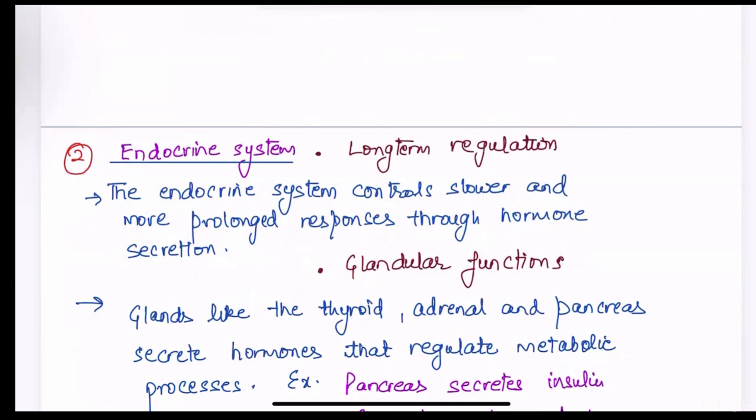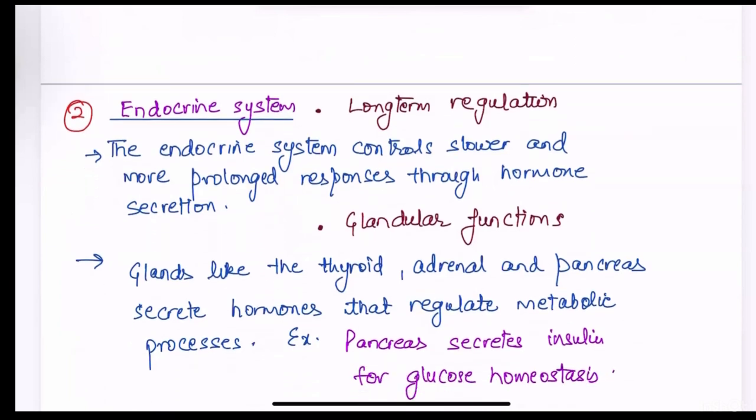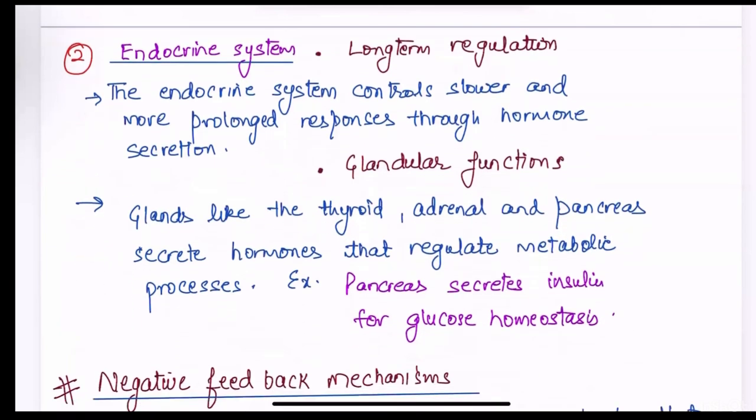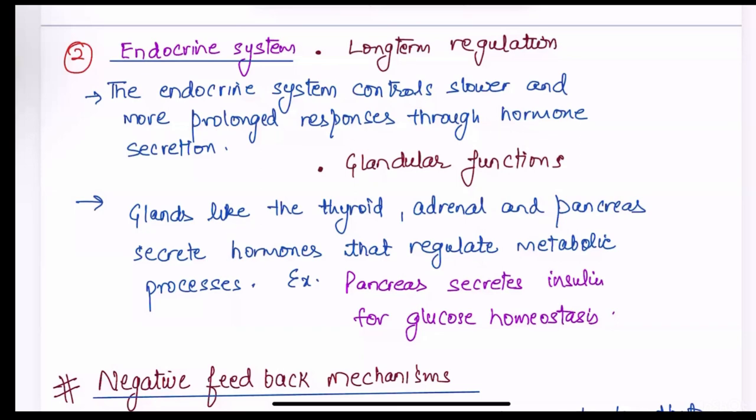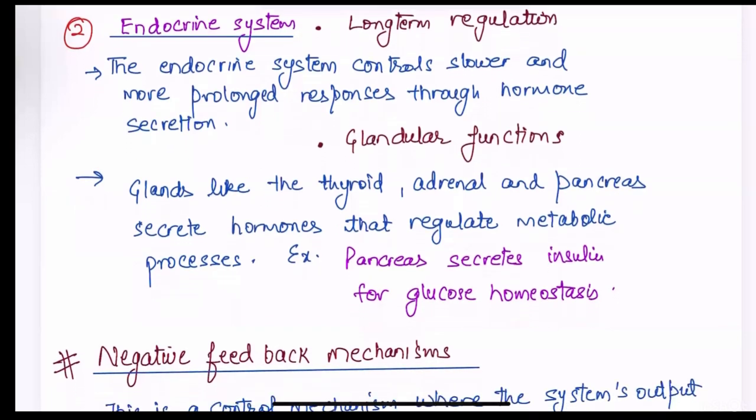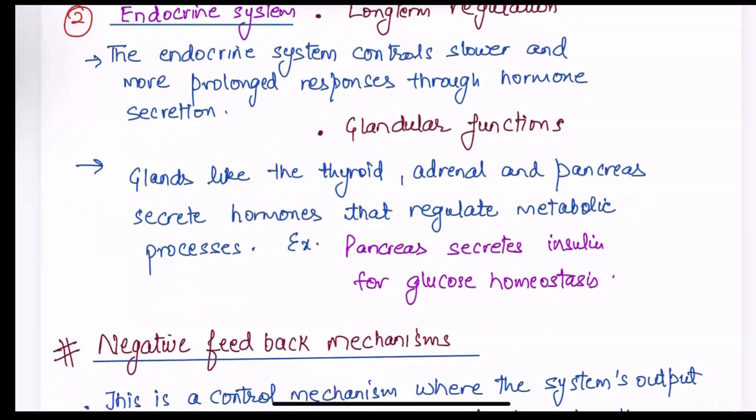Endocrine system. First role is long term regulation. The endocrine system controls slower and more prolonged responses through hormone secretion. Glandular functions. Glands like thyroid gland, adrenal gland and pancreas, they secrete hormones that regulate metabolic processes. For example, pancreas secrete insulin for glucose homeostasis.